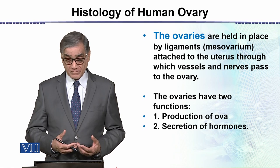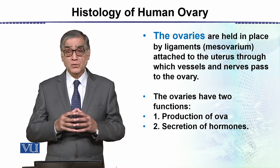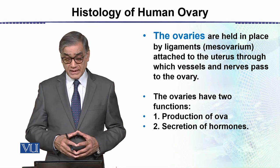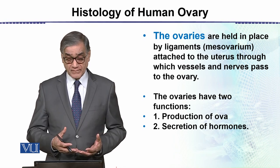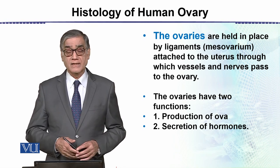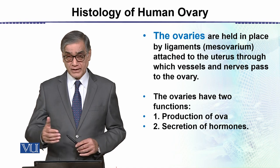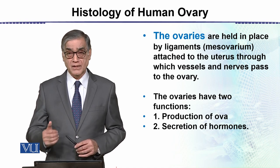The ovaries have two main functions to perform: one is the production of ova, and secondly the secretion of hormones. We will see these things in detail.